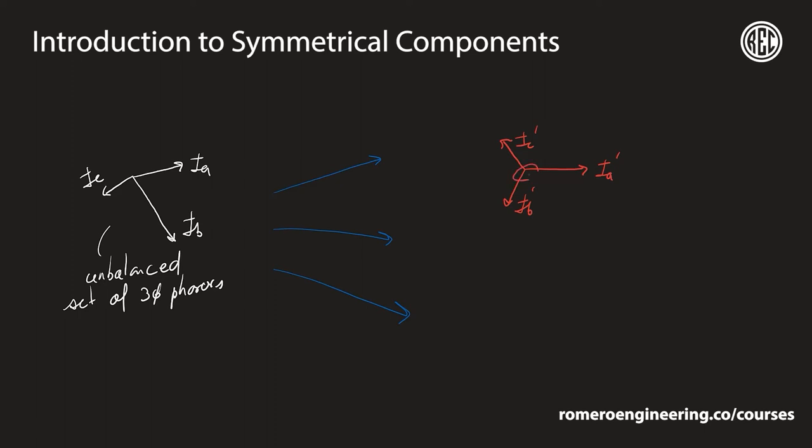Notice that if we rotate counterclockwise, the positive sequence set has an ABC rotation system. So if our system is ABC rotation, the positive sequence set also rotates in the ABC direction.